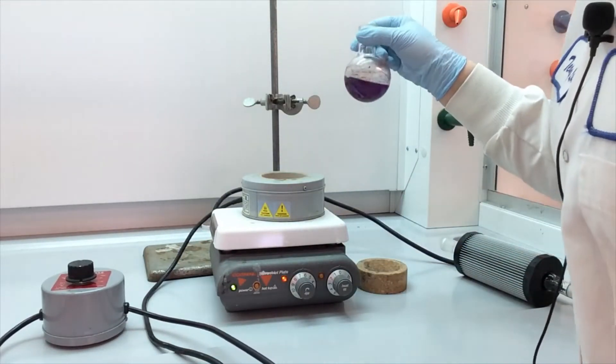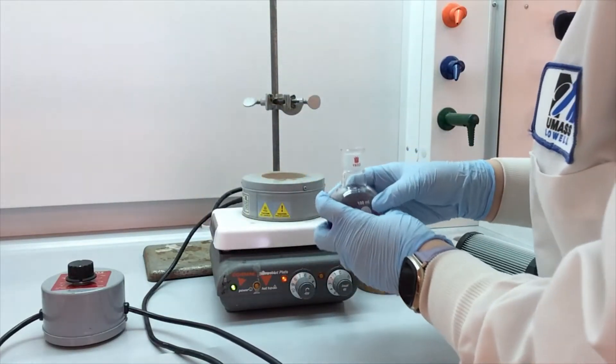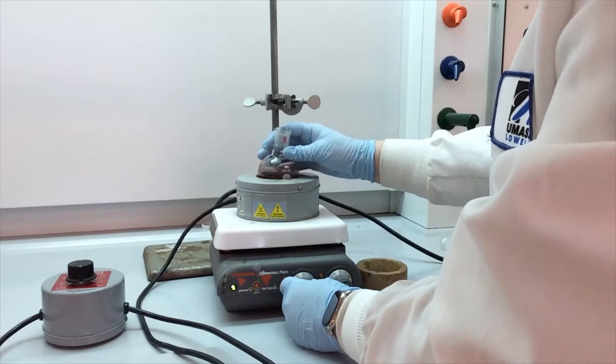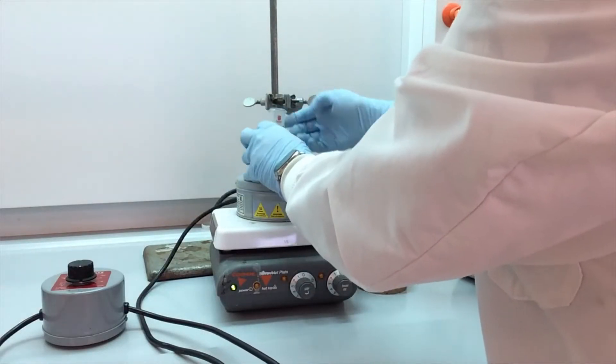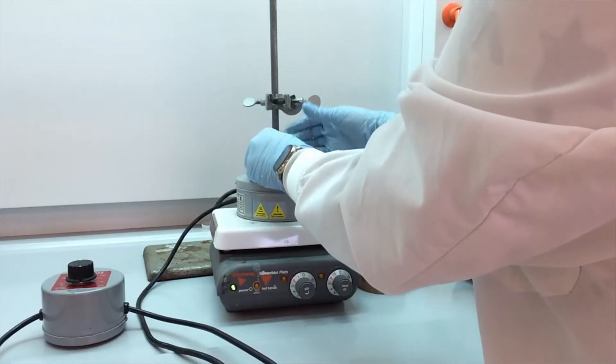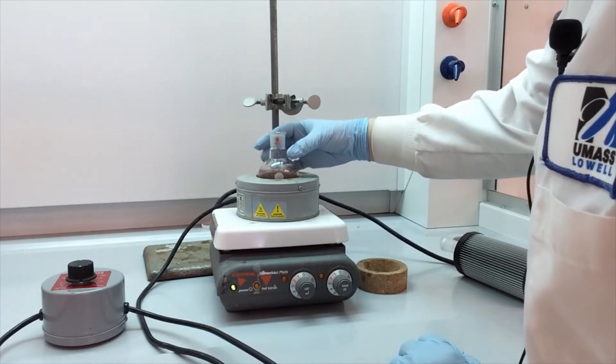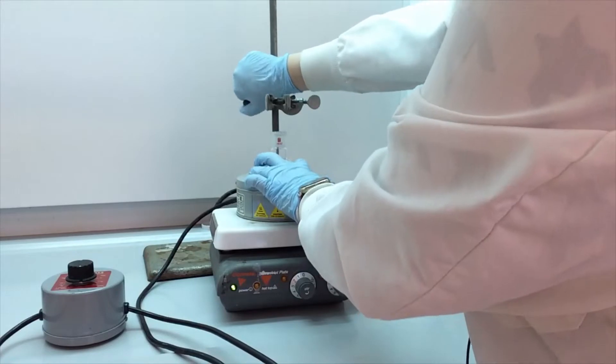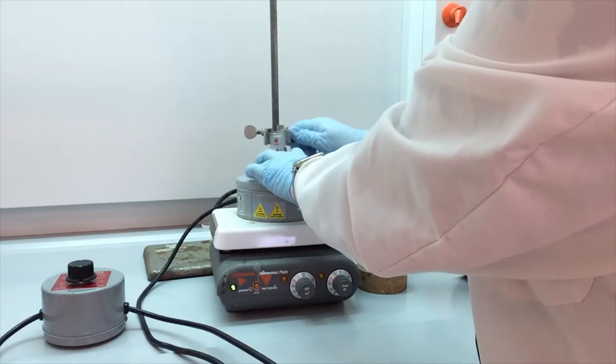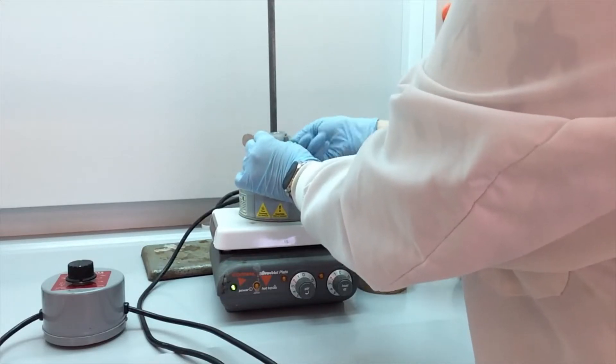So we have our reaction with our solvent. There's also a stir bar in here. So now what we want to do is set this in the mantle. So it definitely fits. And we want to clamp it right here on the ground glass joint. So that's the strongest part of the glassware. I'm going to lower my clamp and make sure that it's clamped very tightly.